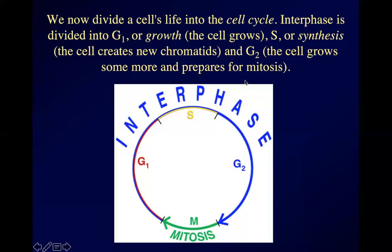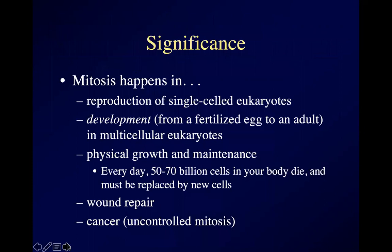The lengths of these pieces of the circle don't necessarily signify accurate lengths of time — the lengths vary a lot. But that's how we diagram a cell's life cycle. The context in which you encounter this includes single-celled eukaryotes reproducing by mitosis — you get more amoebas or more green pond scum by mitosis.